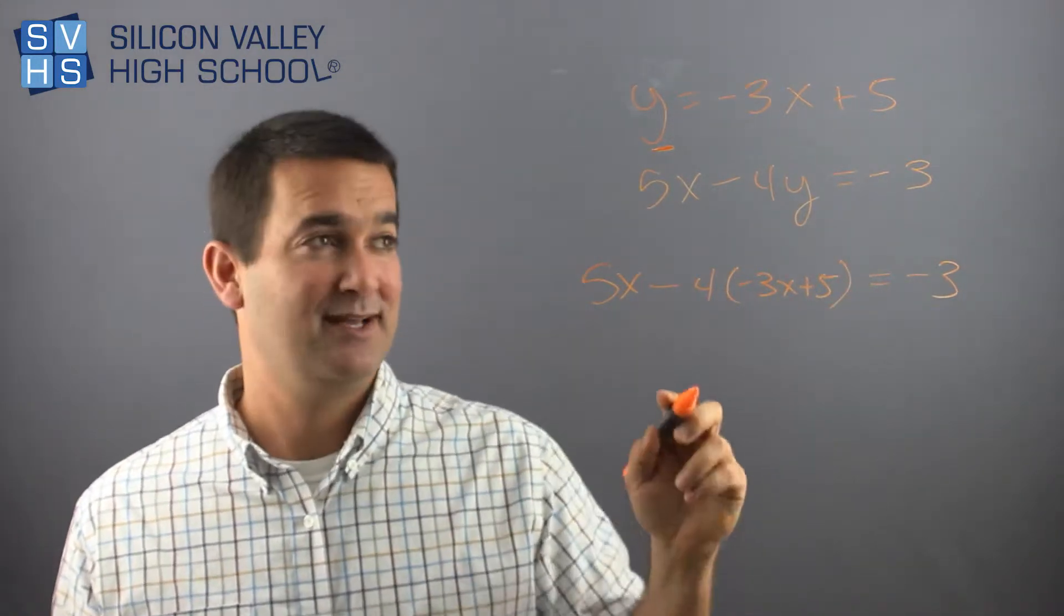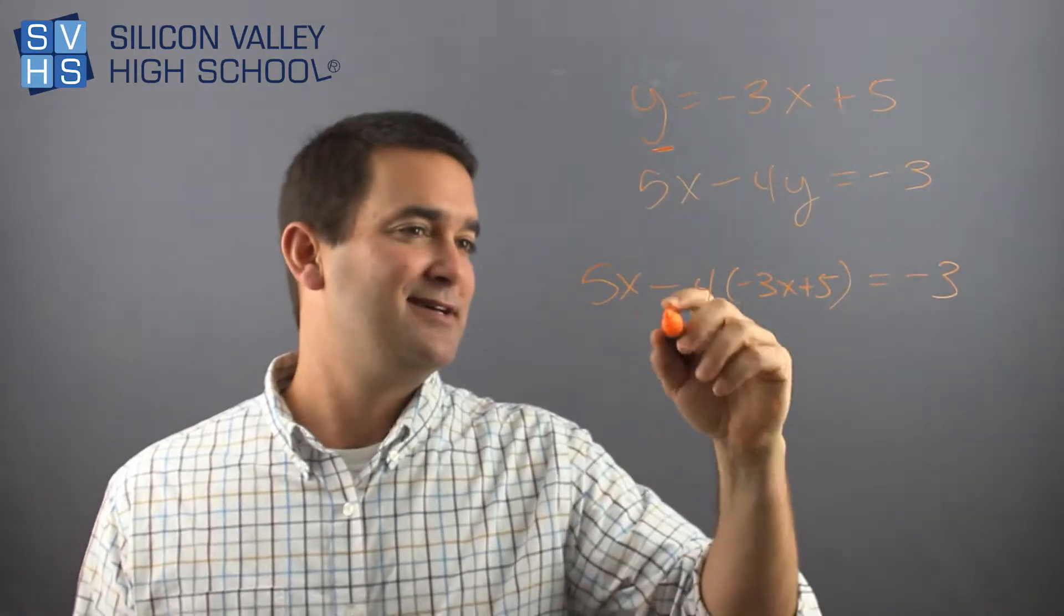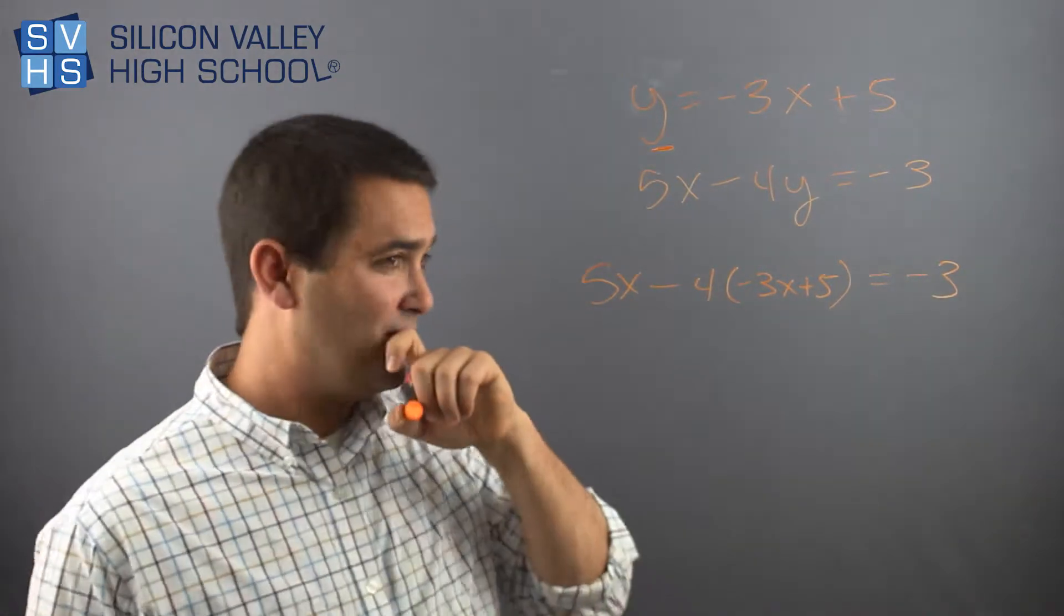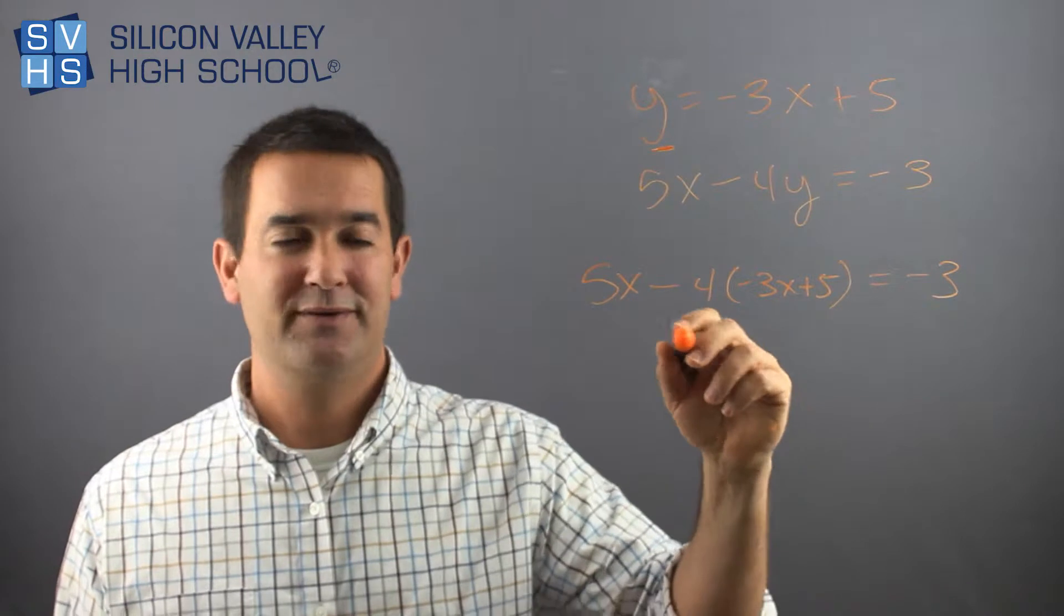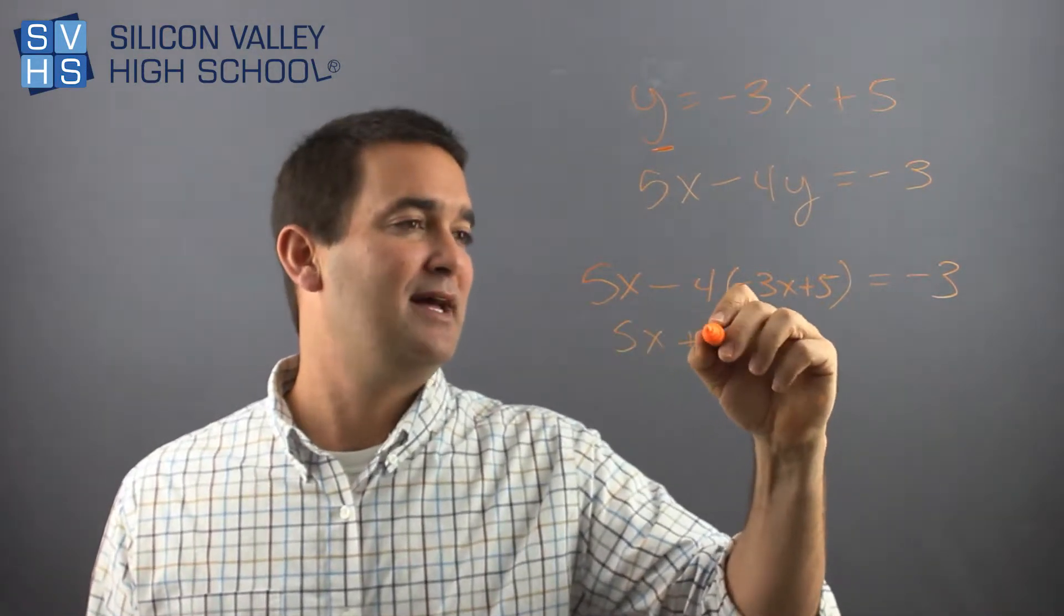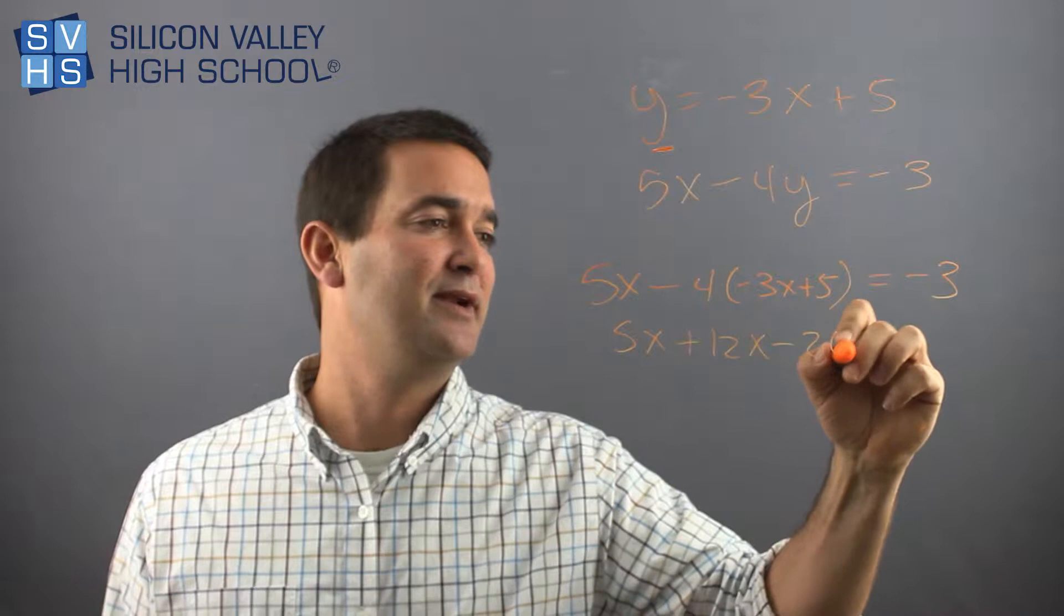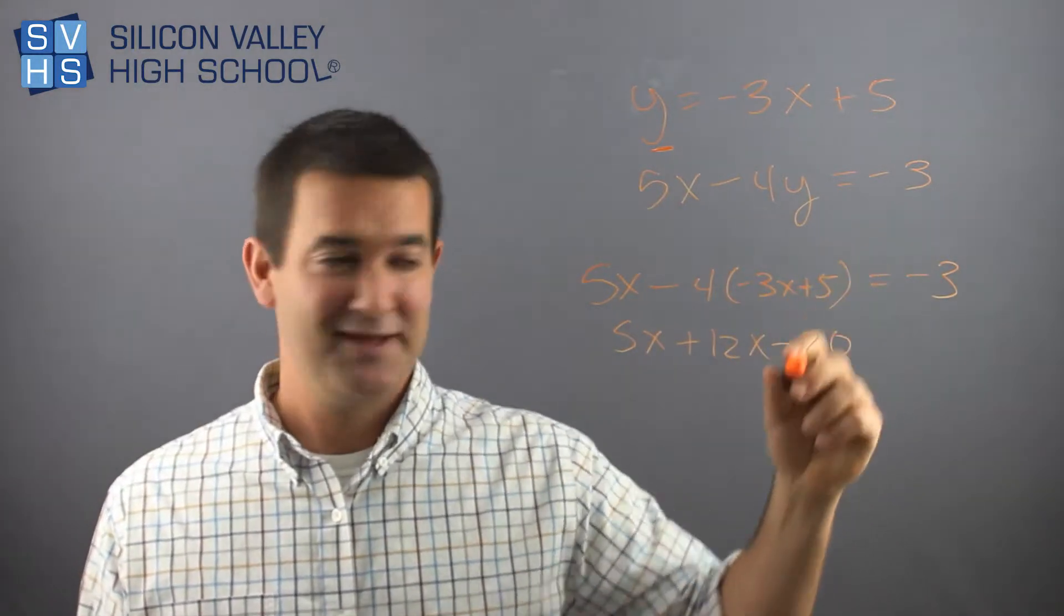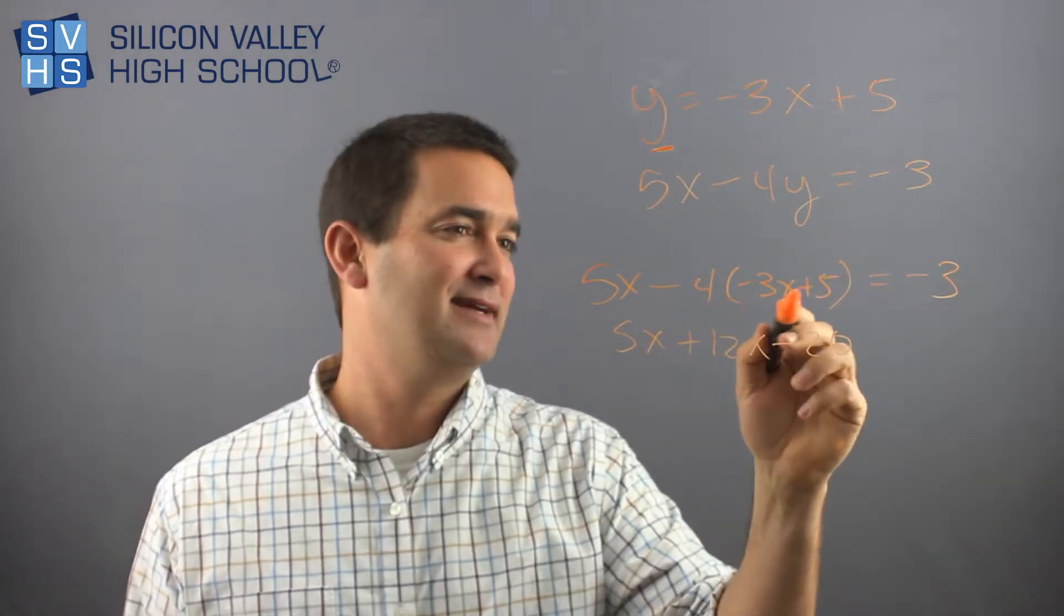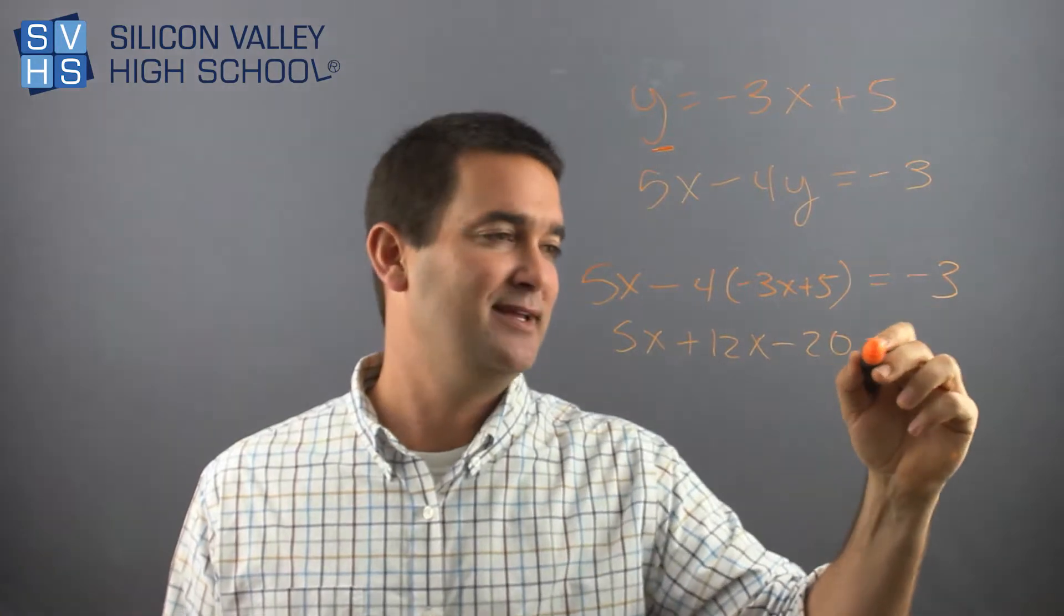This is going to yield me an x. I'll put it back in to get my y. So I'm going to distribute. I'm not going to distribute a 4, I'm going to distribute a negative 4. So I get 5x plus 12x minus 20. Negative 4 times 5 is negative 20 equals negative 3.